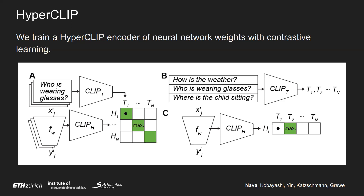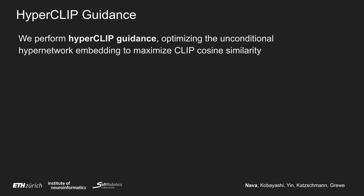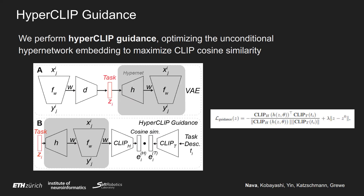Training these two encoders in tandem allows us, for example, to do task inference. In step B, if we are given a certain neural network that has already been trained and a certain number of candidate questions, we can embed all of them with our CLIP encoder, and then embed the neural network weights with the HyperCLIP encoder. By comparing all the inner products, we can find out what was most likely the question the neural network was originally trained on. However, we are not really interested in task inference — we are interested in generation. What we can do to perform generation using CLIP is CLIP guidance, or in our case HyperCLIP guidance: optimizing the unconditional hypernetwork embedding to maximize CLIP cosine similarity. Specifically, we take our HyperVAE generator and optimize over the latent Z such that the generated weights W, when embedded with the CLIP encoder, have high cosine similarity with the CLIP encoding of the task descriptors.